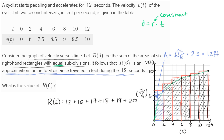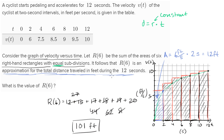So what does this give us? 12 + 15 = 27, + 17 = 44, + 18 = 62, + 19 = 81, + 20 = 101 feet. Capital R of six equals 101 feet, which is an approximation — really an over-approximation — for the total distance traveled during the 12 seconds, because for every interval we're taking the fastest velocity. If we took the slowest velocity, it would be an underestimate with left-handed rectangles. We might get something in between by taking the average, but we'll do that in future videos.